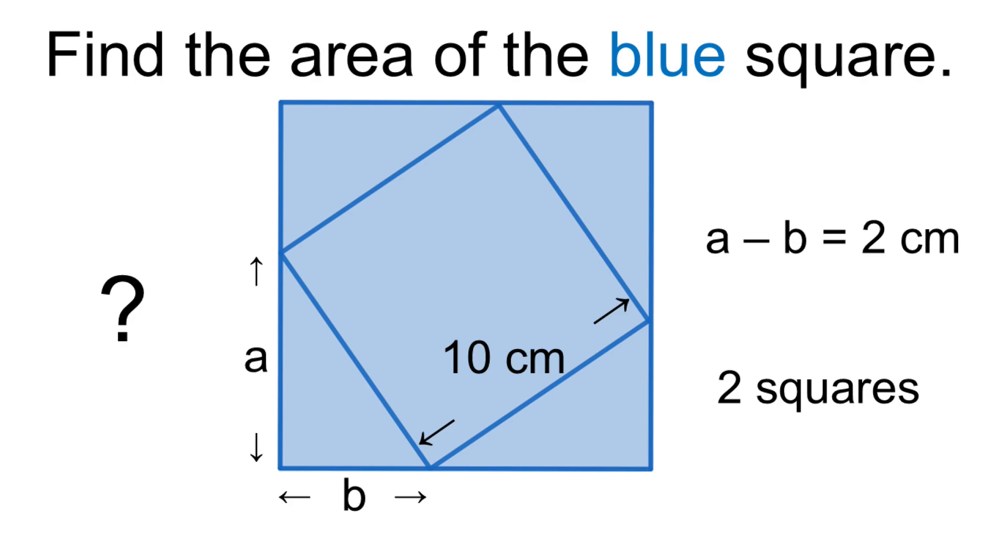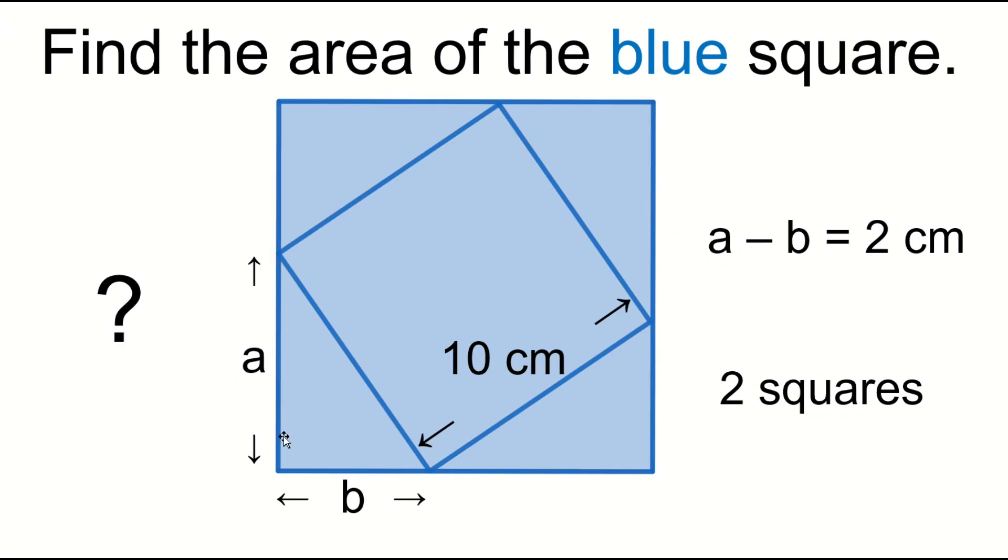Hello, welcome to my channel. There are two squares. The length of this line segment is 10 centimeters. A minus B equals 2 centimeters. Then, find the area of the blue square.